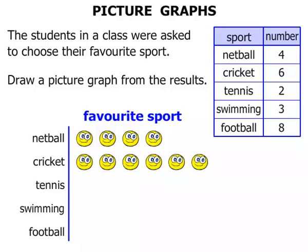How many for tennis? There were two. So how many smiley faces? That's right — one, two. Swimming — there were three people who chose that, so we draw one, two, three for swimming.